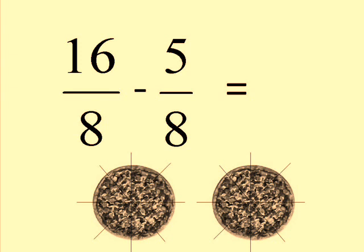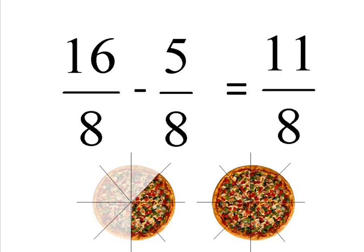So, 16 over 8 take away 5 over 8. We can slowly take all these away. 16 take away 5 gives you 11 and the bottom number is going to stay the same as 8. This can be simplified further to become 1 and 3 eighths.